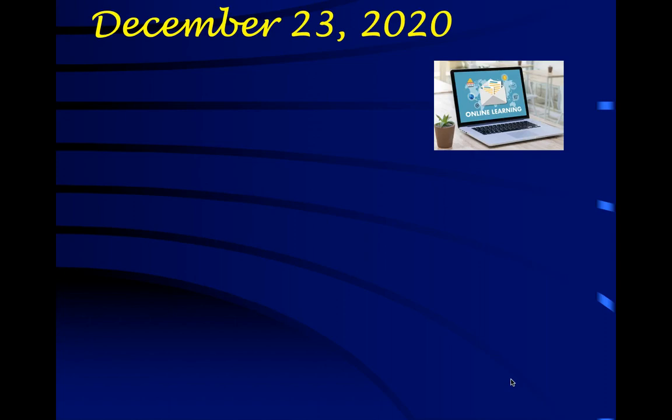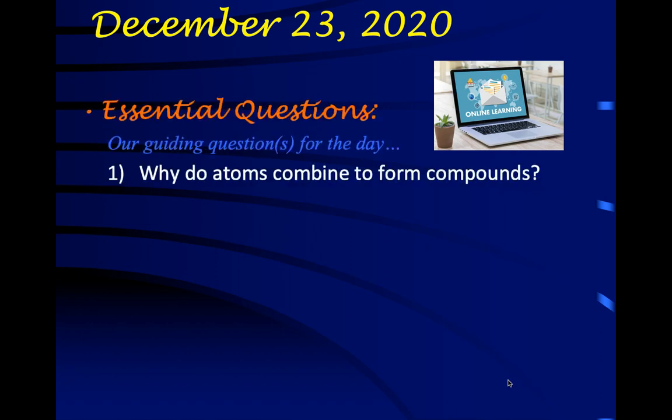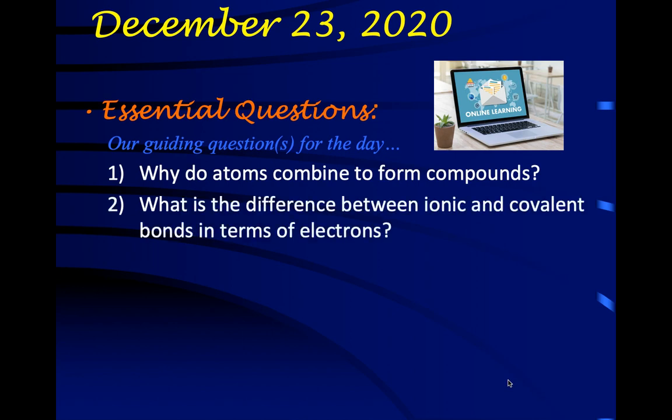Hello, and welcome to another online learning day, another topic in chemistry, as we continue to explore and understand more about atoms connecting to other atoms and building pieces of matter. Our essential questions today are: why do atoms combine to form what we call compounds, what's the difference between the bonds that hold those compounds together, and we're going to talk about something called an oxidation number.